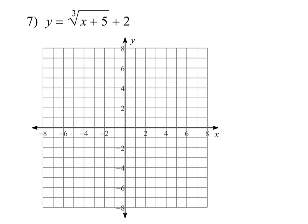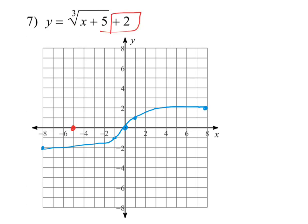This one is a cube root. On the original, the center is at the origin — it goes up 1 right 1, and up 1 right 7. Our function has plus 5 inside, which moves it left 5, and plus 2 outside, which moves it up 2. So here's our new center. From there we go up 1 right 1, then up 1 right 7, and down 1 left 1 on the other side — though that falls off the graph. You're just taking your center, moving left 5 and up 2, to get the new graph.